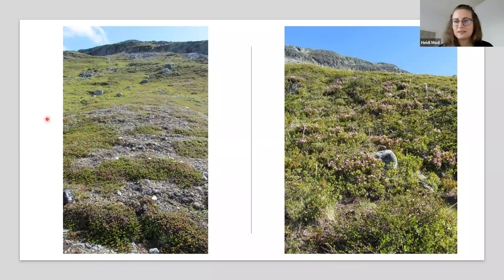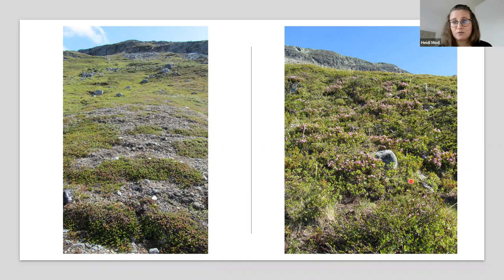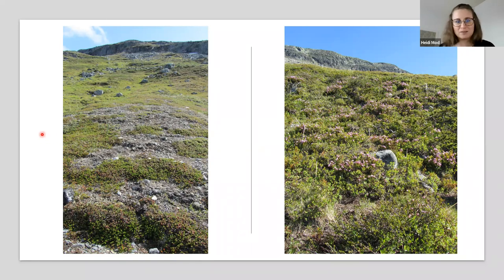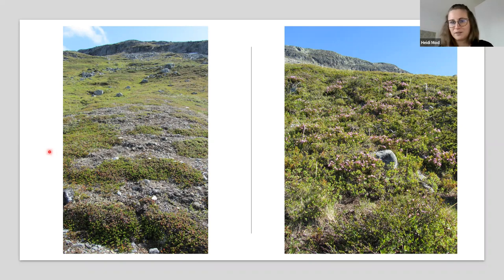Based on our ecological knowledge, we can think of some ideas about why there are differences in the vegetation - for example, less sun on the northern side, lower temperature, versus the warmer conditions on the southern slope. If we look in more detail, there is fine-scale variation in mesotopographic parameters - little ridges affecting moisture and little hollows collecting moisture, affecting vegetation.